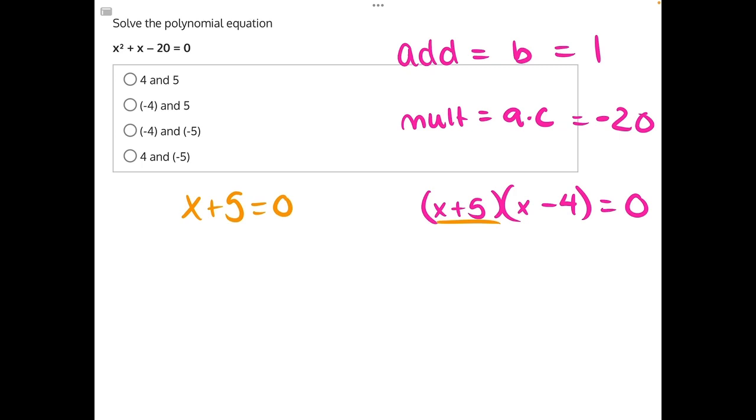We'll have to do opposite operations to isolate x. In this case, 5 is being added to x, so the opposite operation is subtracting 5 from both sides. These will cancel, leaving us with x is equal to negative 5. This will allow us to eliminate our first two answer choices for having positive 5s.